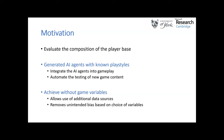Additionally, we can look to generate AI agents with these known styles, and these can be used in a number of applications. One such application would be to automate the testing of new game content using playstyles known to exist from the player base. However, ultimately we believe this should be achieved without game variables, as it introduces a couple of main benefits. Firstly, it allows the use of additional data sources such as let's play videos. Additionally, the choice of variables can have a heavy effect on the playstyles you cluster, so removing them eliminates unintended bias.